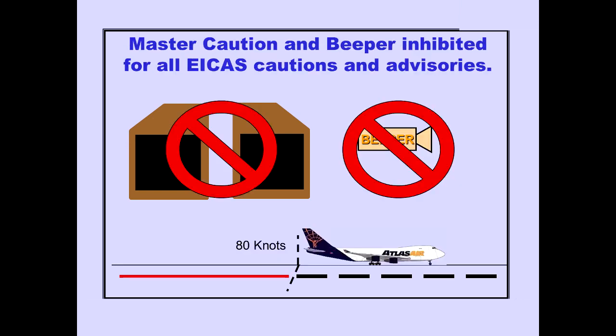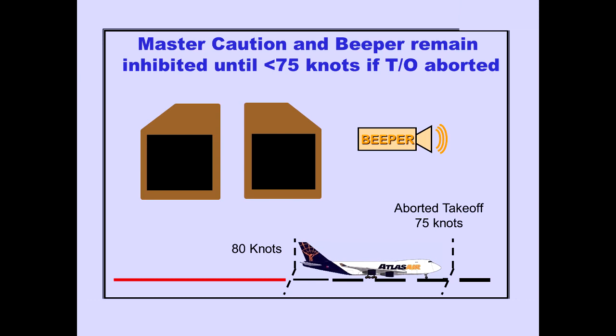During takeoff, the master caution lights and beeper are inhibited for all cautions above 80 knots to prevent distraction. If a caution condition occurs, the associated ICAST message is still displayed. If the takeoff is aborted above 80 knots, the master caution lights and beeper remain inhibited until speed decreases below 75 knots.